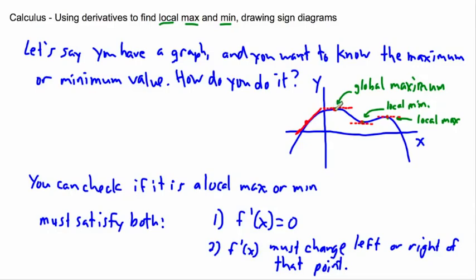See, at this point, if I go a little bit to the left, my derivative is positive because the graph is increasing. But to the right of it, the derivative is negative — it's decreasing. So f prime of x must change sign left or right of that point. To the left the derivative is positive, to the right it's negative, and at that point the derivative is zero. So it really is a local max — in this case, it's the global maximum.